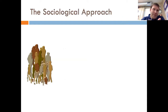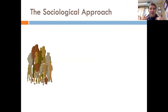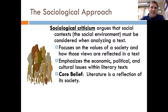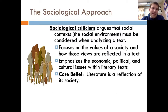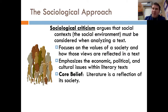Now we're going to get into the one that is a little bit more complicated, requires a little bit more calories, requires you to shift the way that you kind of frame the text. With reader response you just show up and do it. The sociological approach — you're kind of looking at things from a different perspective. Sociological criticism argues that the social context, the social environment, must be considered when analyzing a text. This focuses on the values of society and how those views are reflected through the text, and it emphasizes economic, political, and cultural issues within literary texts. The core belief is that literature is a reflection of its society — a mirror of society.